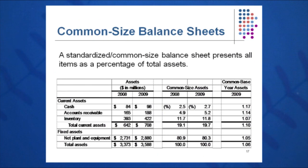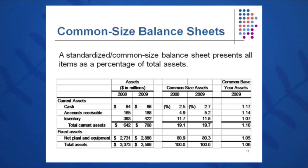Here's a sample common size balance sheet. Everything is done as percent of assets, so I divide each line item by its corresponding total assets. If I want cash as a percent of assets, I just take 84 over 3373 and get 2.5 percent, and so on down.